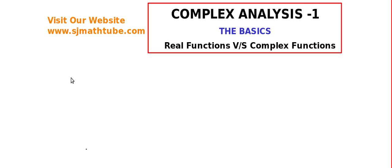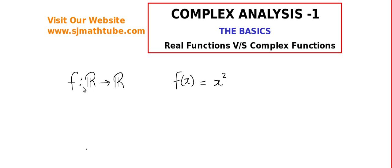To start, consider a function which is defined from R to R, and the function is f(x) = x². Here I have defined that the domain — the input values — will be taken from the real number system. That means you can input any real number you like. For example, I can input 0 and I will get the output 0 squared, that is 0.